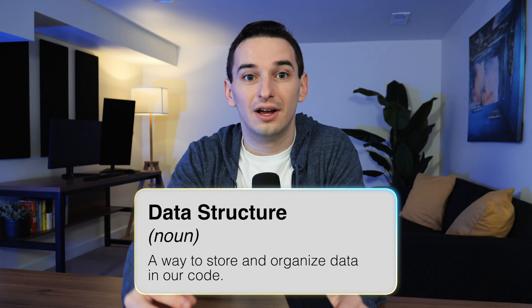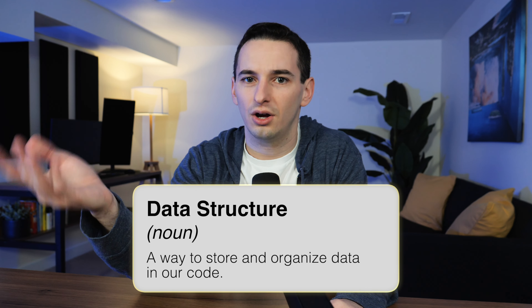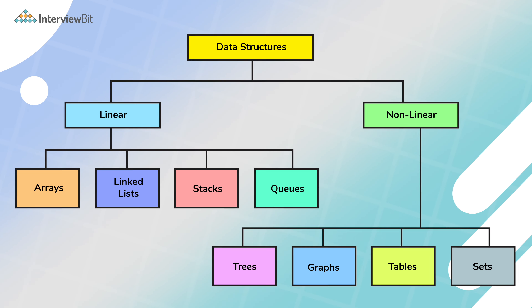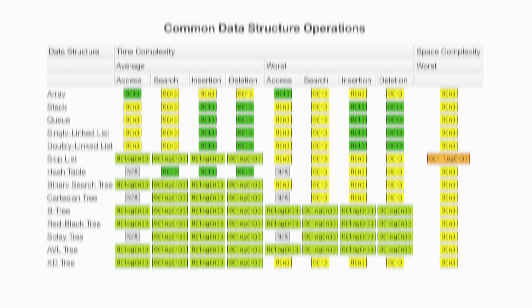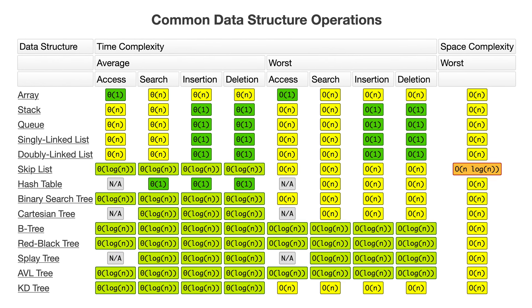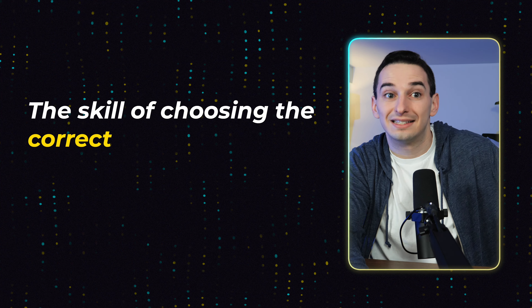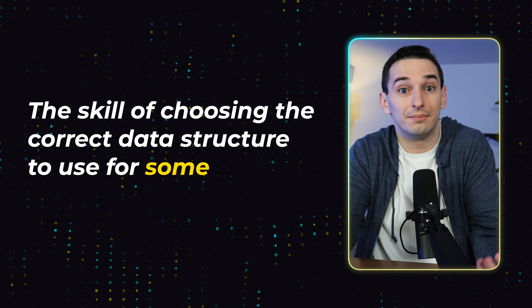To understand what exactly it is that we are trying to learn, I would define a data structure simply as a way to store and organize data — just some values in our code. Each of these different types of data structures are going to have different trade-offs based on what that data looks like and what operations we might need to do on it. The skill of data structures, as we talk about it in coding interviews, is really just the skill of choosing the correct data structure for a given scenario.